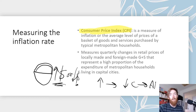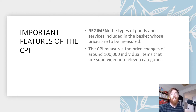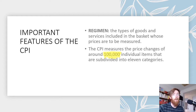The first component is the regimen, which is the goods and services included in the basket whose prices are measured. It includes around a hundred thousand individual items subdivided into ten or eleven categories that are weighted based on their importance. There is some variation in the number of goods and services depending on the source, but essentially the regimen defines the types of goods and services included.